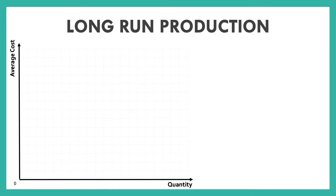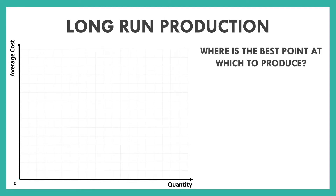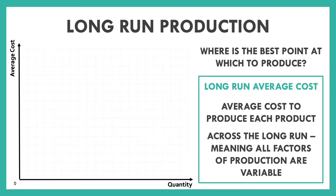Everything so far in 3.2 that we had been discussing was about short-run production. Let's talk a little bit about long-run production — whenever we see that our labor and our capital are both variable. In order to do that, we need to look at something known as our long-run average cost curve. If you notice, this graph is a little bit different: along our x-axis we have quantity, and along our y-axis we have something called average cost.